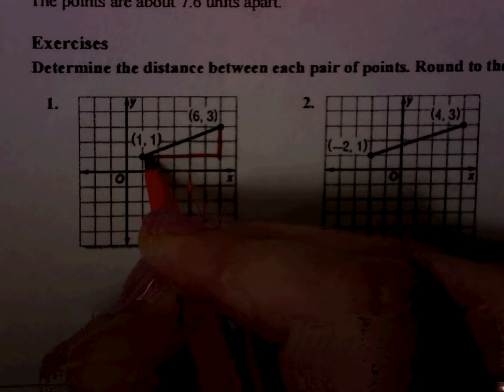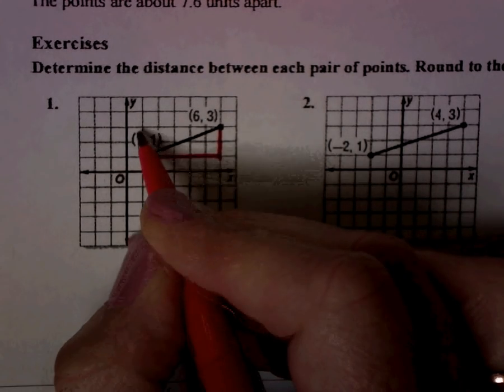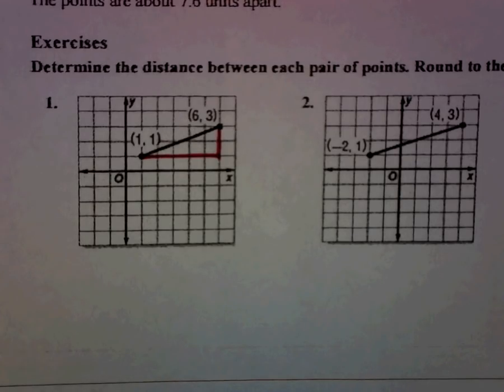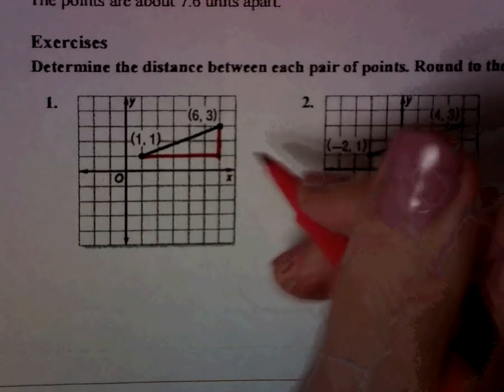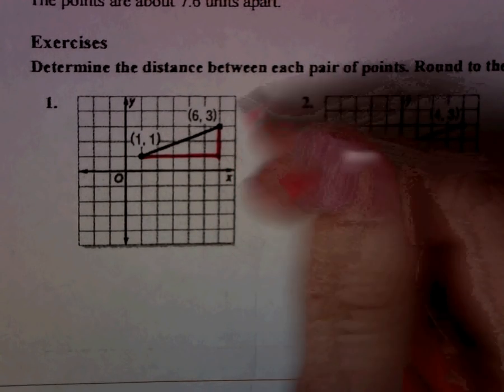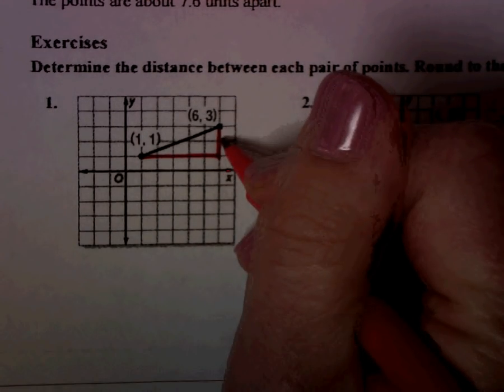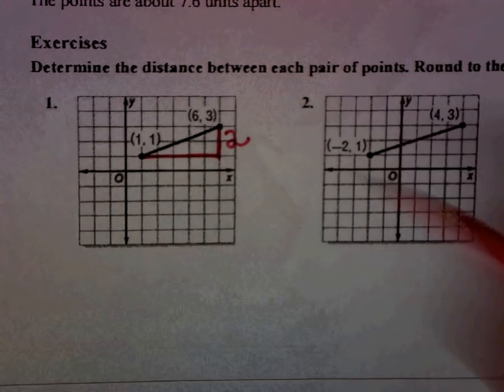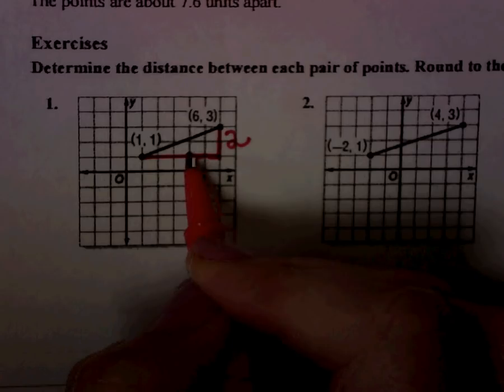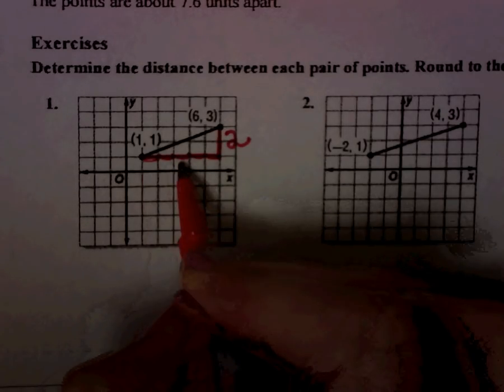If I wanted to draw my triangle up above it, I could do that as well. Now, the reason we draw a right triangle is if we have vertical and horizontal lines, we can actually count our units. So this would be 1, 2 units. And then this one would be 1, 2, 3, 4, 5 units.